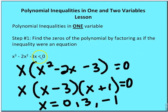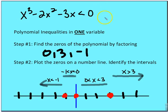Let's take a full example and go through the entire process. We have x cubed minus 2x squared minus 3x is less than zero. We want to find the zeros of the polynomial by factoring as if the inequality were an equation. I factor out the common factor of x, then factor the quadratic, and end up with zeros at x equals 0, 3, and negative 1. I plot these on a number line.